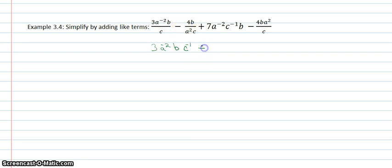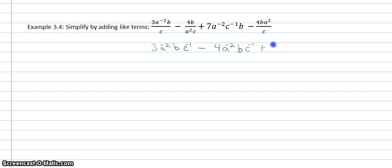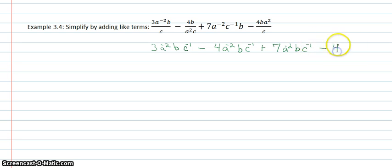For my next term, I keep the minus sign the same. I have 4 — move the a up, so it'll be a to the negative 2 power. The b stays the same, and c will have a negative 1 power. The plus sign stays the same, and the 7 will have a to the negative 2 power. I'm going to change the order so they're all in the same order: b, then c to the negative 1 power. And then minus 4 — the a squared stays on top, b stays on top, and c comes to the top as c to the negative 1.